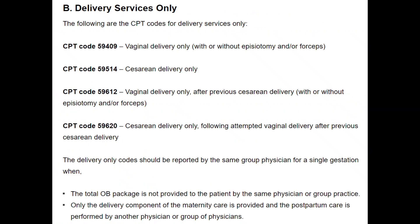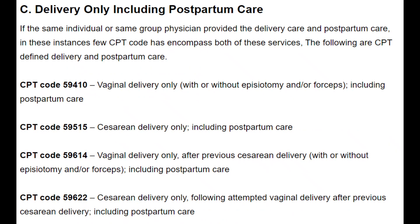This slide shows delivery services only — meaning our surgeon is performing only the delivery. If it is vaginal delivery only, use 59409. If it is cesarean delivery only, use 59514. CPT 59612 is vaginal delivery after a previous cesarean delivery. CPT 59620 is cesarean delivery following attempted vaginal delivery after a previous cesarean delivery.